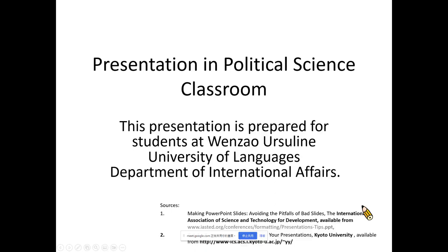In the political science classroom, when we do academic presentations, there are some requirements that are basically universally accepted in academic circles. We use content to persuade the audience, not just effect. Throughout the presentation, it is a good chance for you to highlight the most important parts you want to deliver to your audiences. You have to keep in mind that the audience is the target when you prepare your presentation.